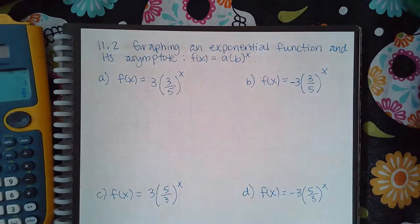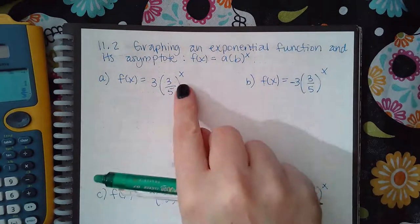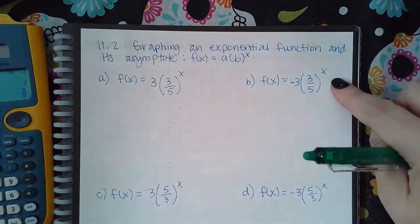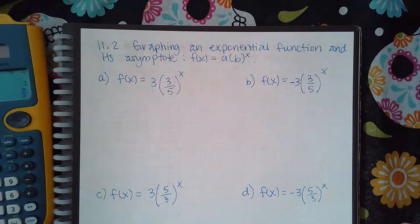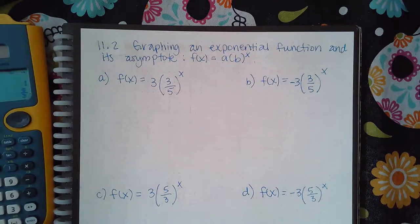Here we have 11.2 graphing an exponential function and its asymptote. Notice that there's no vertical shift, it's not going to shift it up or down. This one is not going to have a vertical shift up or down. Neither is this one. So when I graph each of these things, they are going to have the asymptote on top of the x-axis like as before.